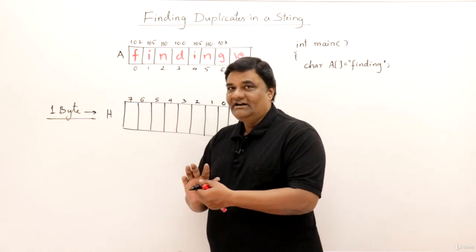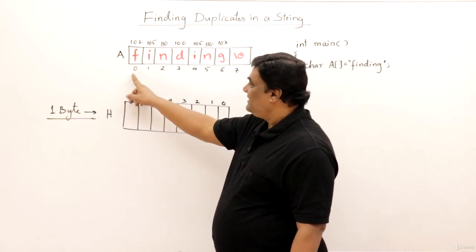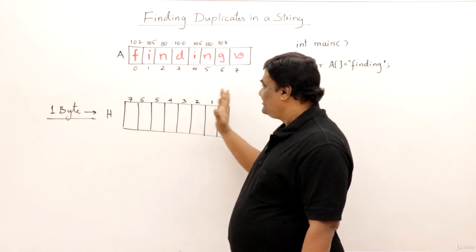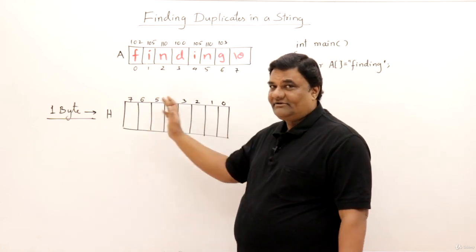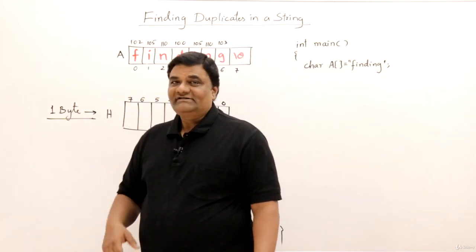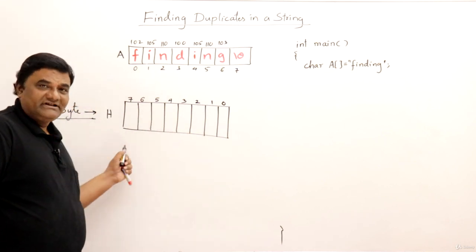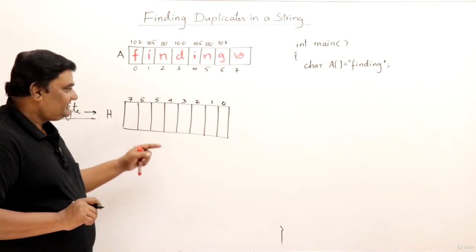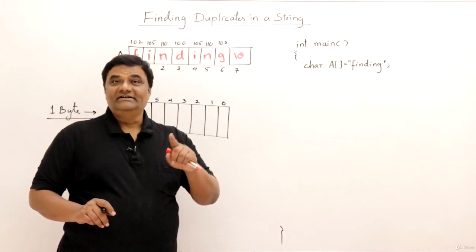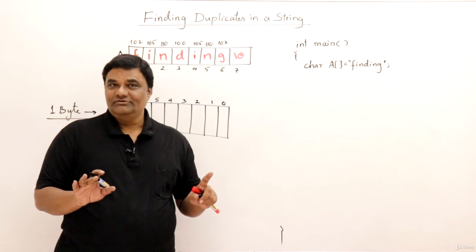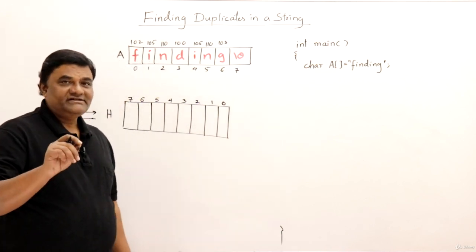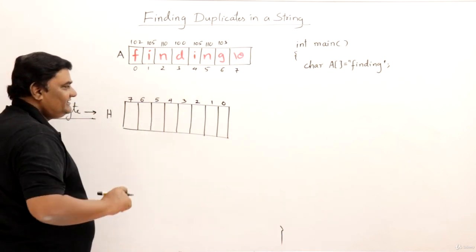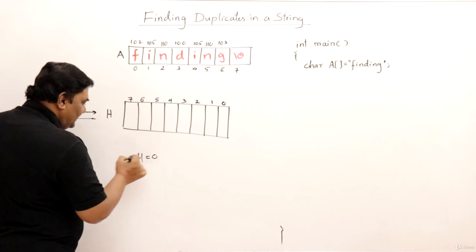This is the least significant bit and this is the most significant bit. In an array we start indexing from zero going left to right, but here indexing goes from zero to seven starting from the right hand side. Any number is stored in the form of binary zeros and ones. Assuming H is initially zero - if I declare a character variable and assign zero, then all bits will be zeros.